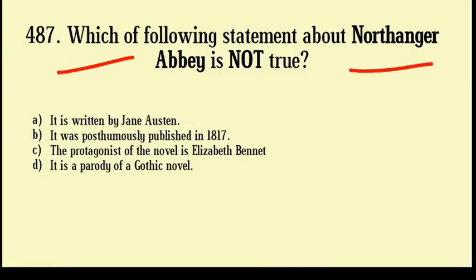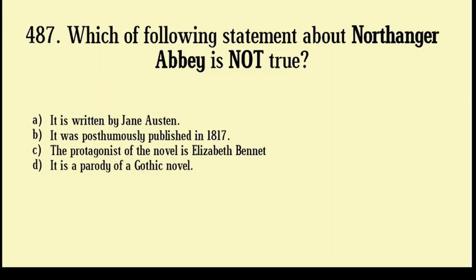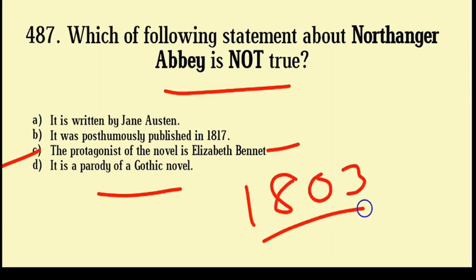Which of the following statements about Northanger Abbey is not true? It is written by Jane Austen; it was posthumously published in 1817; the protagonist of the novel is Elizabeth Bennet; it is a parody of a Gothic novel. Correct answer: Option number C — the protagonist of the novel is Elizabeth Bennet is not a correct statement. Northanger Abbey is a style of Gothic novel written by Jane Austen, completed for publication in 1803 but not published until December 1817, posthumously, along with Persuasion.